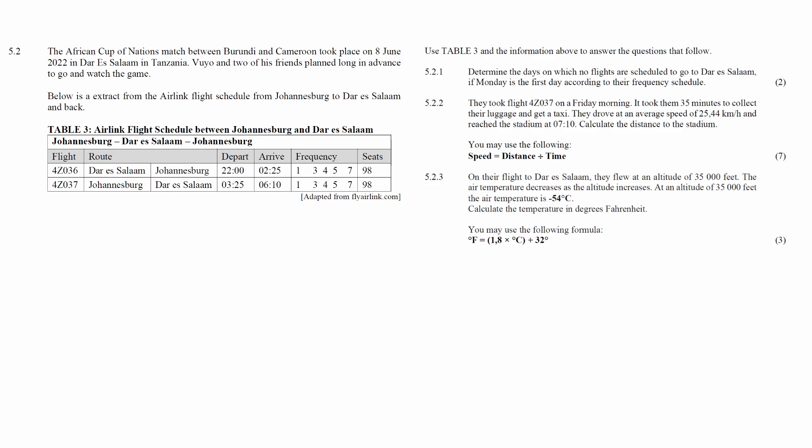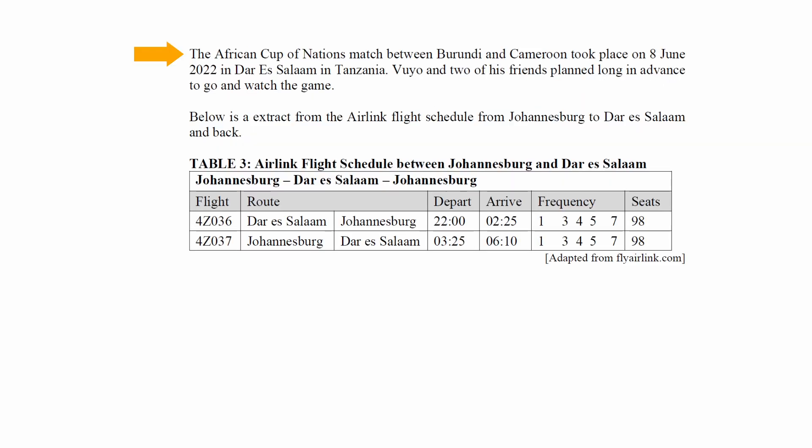Question 5.2 consists of two measurement questions and one maps and plans question designed to assess your understanding of speed, time, distance calculation, and temperature conversion in the context of a travel schedule. It is stated that the African Cup of Nations match between Burundi and Cameroon took place on the 8th of June 2022 in Darul Islam. Buyo and his two friends planned to go watch the game, and you are given an extract of the flight schedule from Johannesburg to Darul Islam and back.